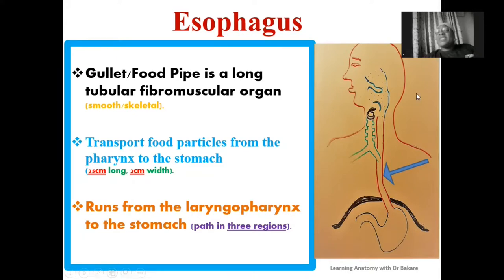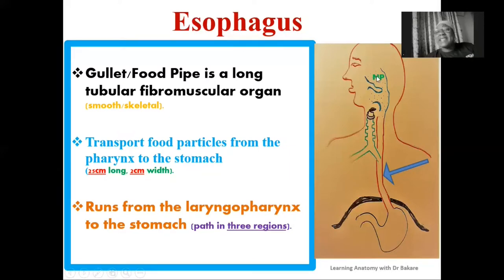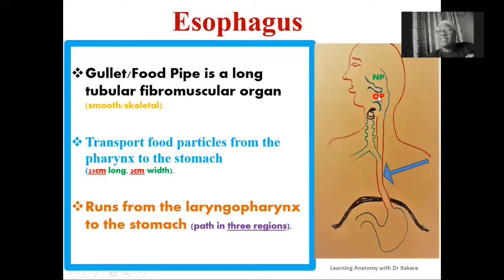The oesophagus connects a specific region of the pharynx — the laryngopharynx — to the stomach down in the abdomen. The pharynx is subdivided into three regions. We have the nasopharynx, the most superior part of the pharynx, also referred to as the epipharynx. It is located behind the nasal cavity. Inferior to the nasopharynx, we have the oropharynx, which is the region of the pharynx located behind the oral cavity.